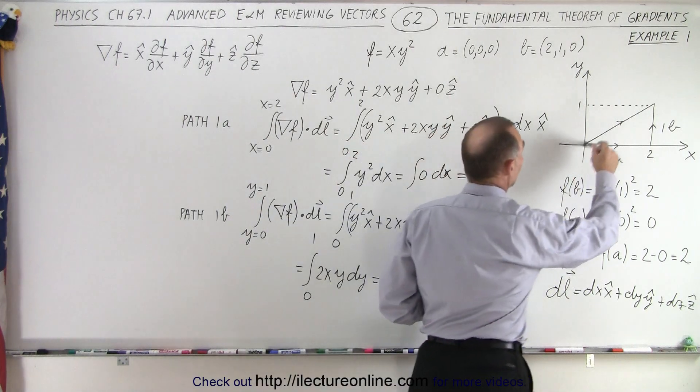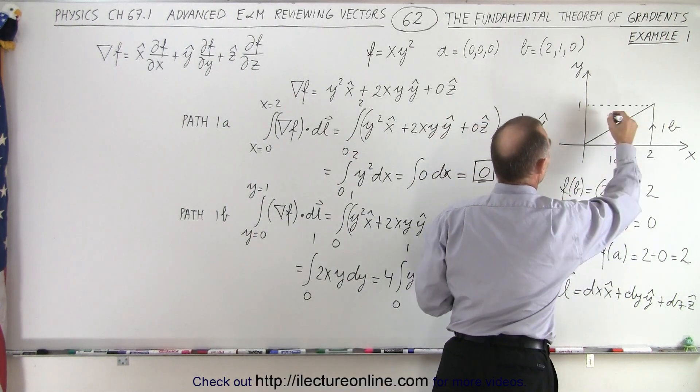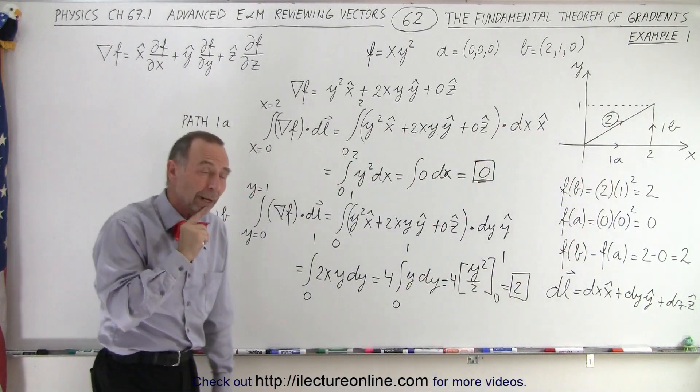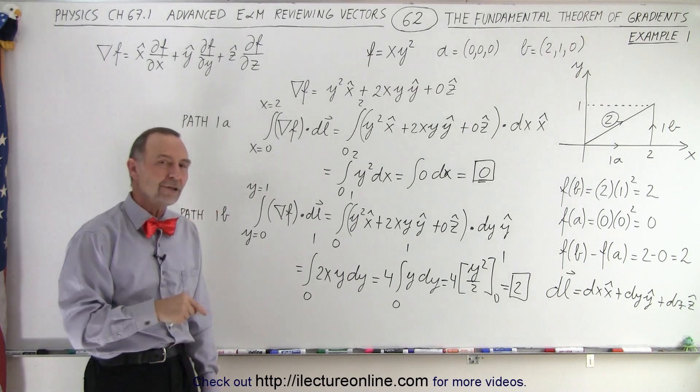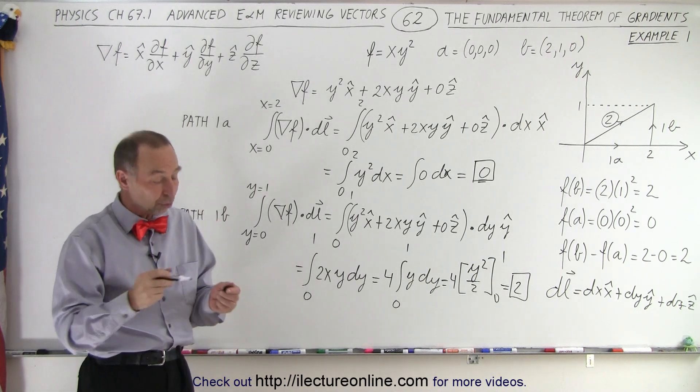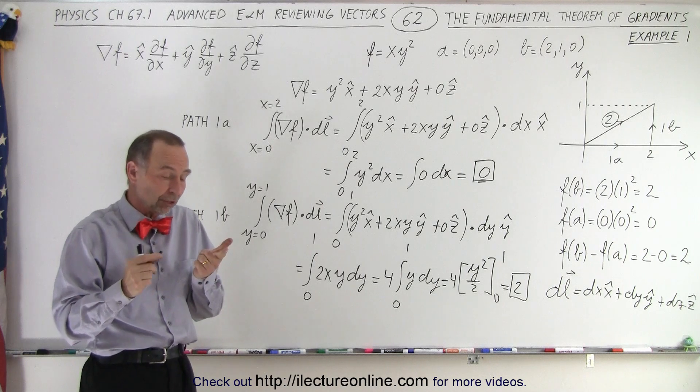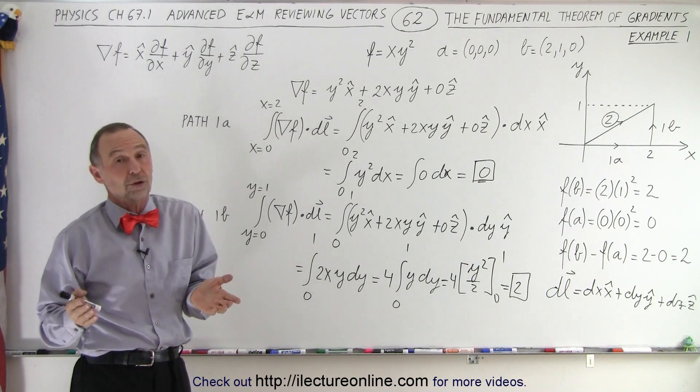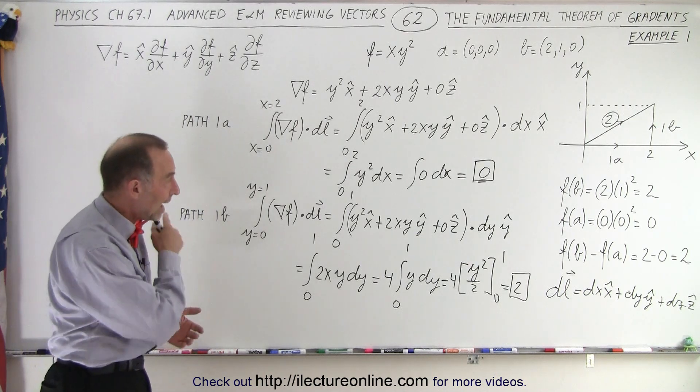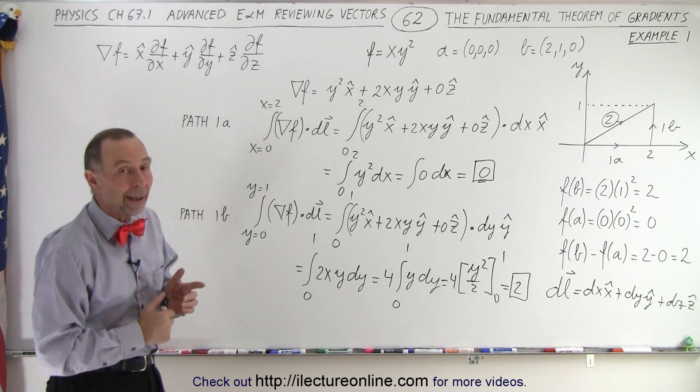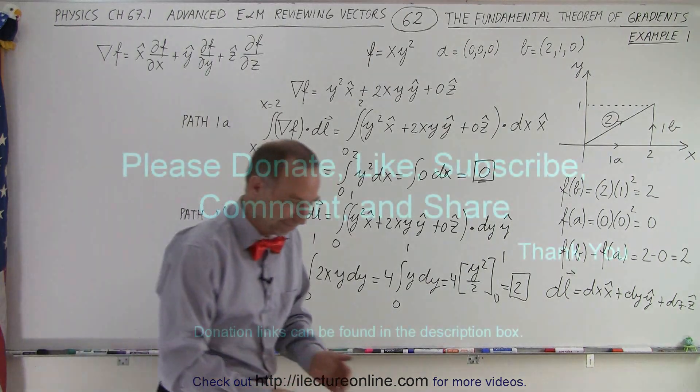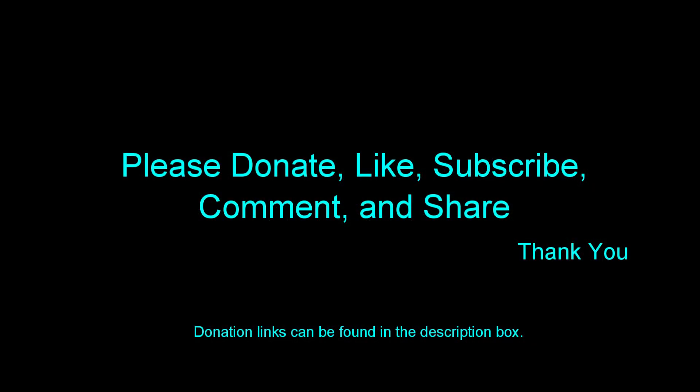Which means that if we actually travel along this path right here, now let's take path 2 along this point, I'll put a little circle around that, then we should get the same result. Well, since I'm running out of board space, let's do one more video where we take that second path, and again we should get the same result, which will both then show that it does appear that the fundamental theorem of gradients does work, and secondly, we can also show that it's path independent. So let's stay tuned, and let's take a look and see what it looks like when we take path 2.